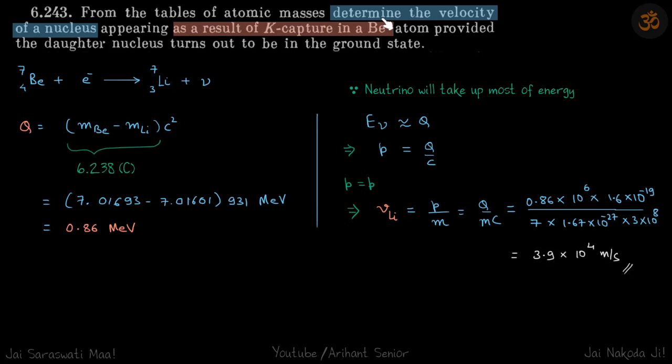From the tables of atomic masses, determine the velocity of the nucleus as a result of K capture of a Be7 atom. So this is our Be7, and K capture means it will just capture an electron into its nucleus, so this will become Li3-7 plus neutrino.